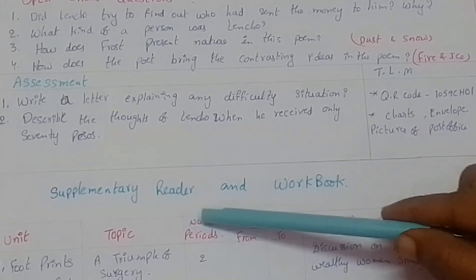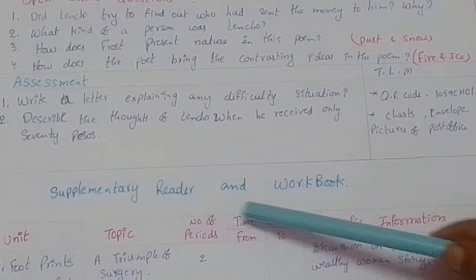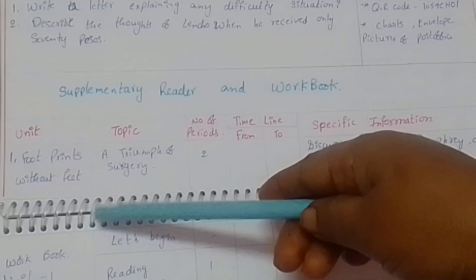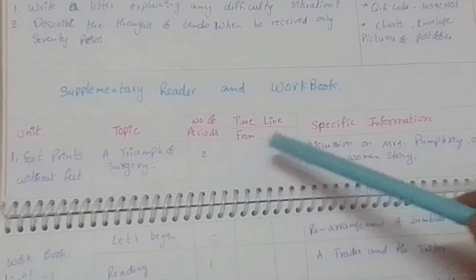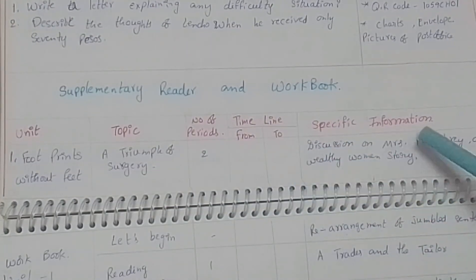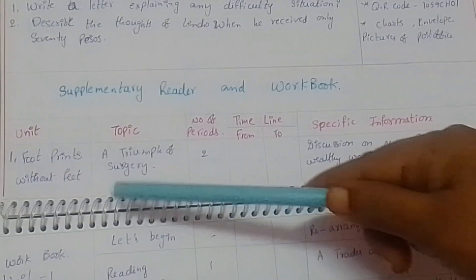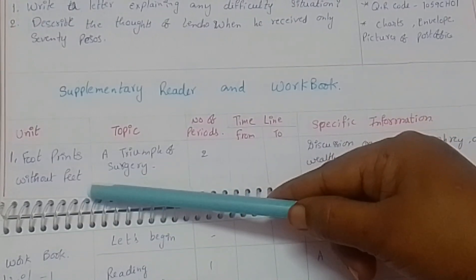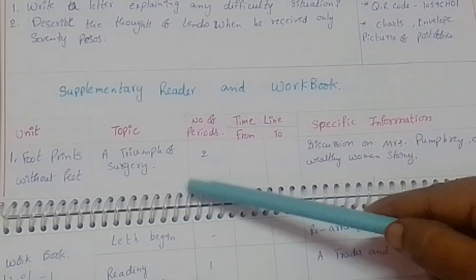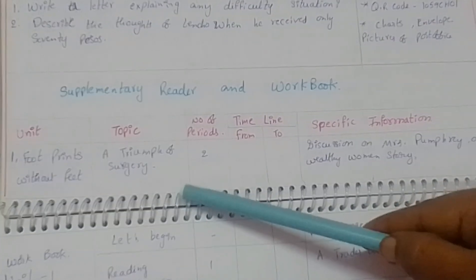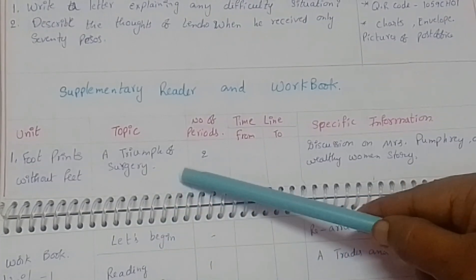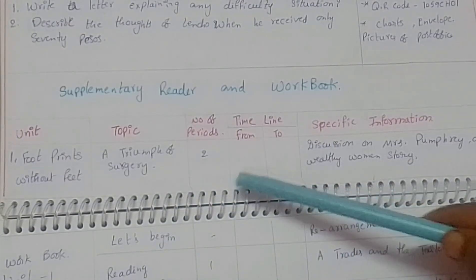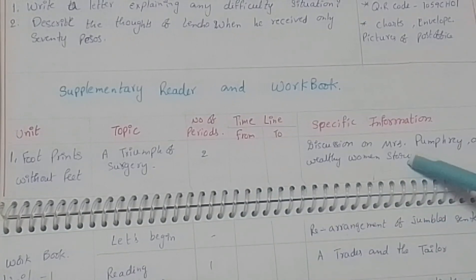You can mention the supplementary reader and workbook exercises periods in the preface only, or you can separately mention like this. I have mentioned separately like this here: Supplementary reader and workbook - unit, topic, number of periods, timeline from to, specific information. Footprints Without Feet - A Triumph of Surgery. This is the supplementary reader book Footprints Without Feet, first lesson A Triumph of Surgery. We need two periods - discussion on Mrs. Pumphrey, a wealthy woman's story here.